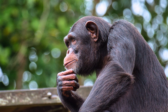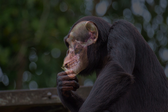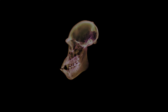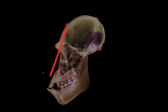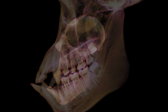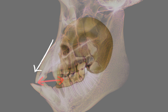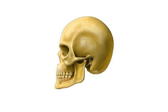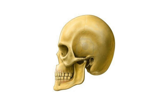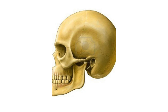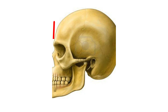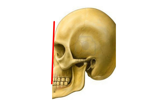Among non-human African great apes, postnatal growth results in a long, vertically deep snout with a forward projecting premaxilla, creating a gap between lateral incisors and canines. Early hominins, including modern humans, exhibit a shorter midface with a more vertical profile.